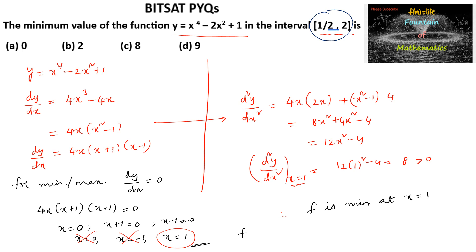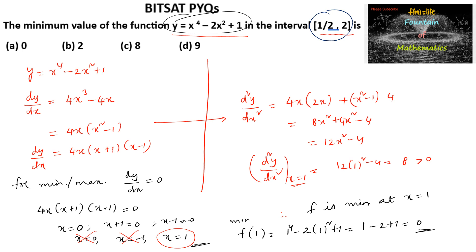The minimum value is f(1) = 1⁴ - 2(1²) + 1 = 1 - 2 + 1 = 0. So the minimum value is 0, which is option A.